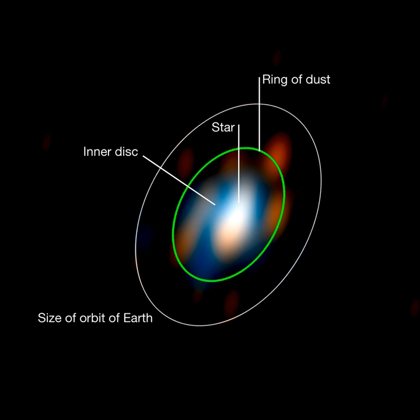Optical interferometers are mostly seen by astronomers as very specialized instruments, capable of a very limited range of observations. It is often said that an interferometer achieves the effect of a telescope the size of the distance between the apertures, but this is only true in the limited sense of angular resolution. The amount of light gathered — and hence the dimmest object that can be seen — depends on the real aperture size, so an interferometer would offer little improvement as the image is dim. The combined effects of limited aperture area and atmospheric turbulence generally limits interferometers to observations of comparatively bright stars and active galactic nuclei.